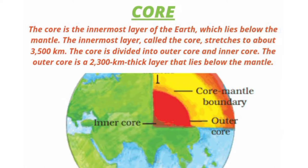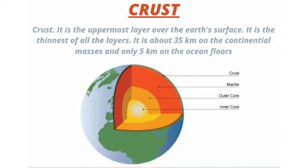The core lies below the mantle. The innermost layer, called the core, stretches to about 3,500 kilometers. The core is divided into outer core and inner core. The outer core is a 2,300 kilometer thick layer that lies below the mantle. Crust. The crust is the uppermost layer over the earth's surface. It is the thinnest of all the layers — about 35 kilometers on the continental masses and only 5 kilometers on ocean floors.